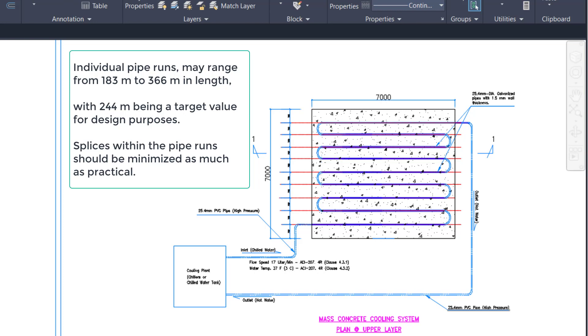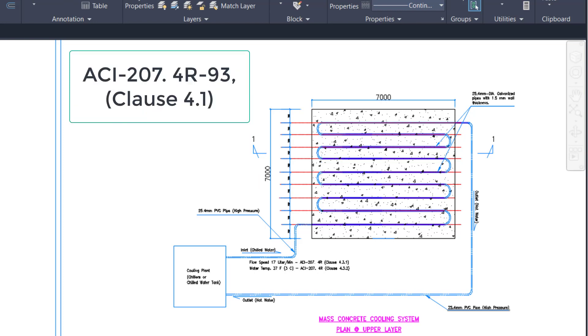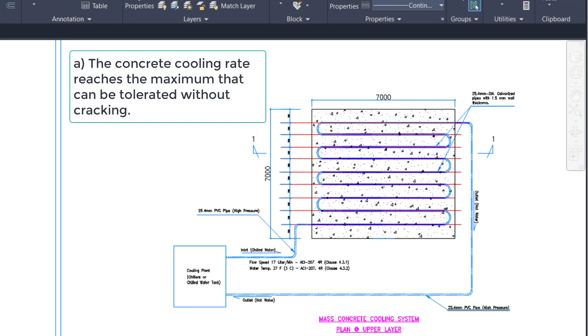Splices within the pipe runs should be minimized as much as practical. As per ACI 207.4R-93 Clause 4.1, after an initial peak concrete temperature has been experienced, cooling is usually continued until the first of these conditions occur. A: The concrete cooling rate reaches the maximum that can be tolerated without cracking.